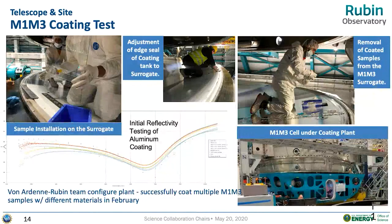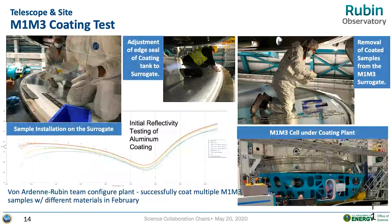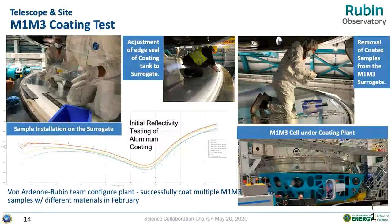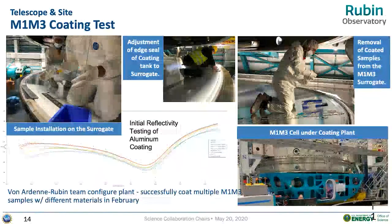Just before the COVID shutdown, the coating system contractor came back from Germany and worked with us to do a full-scale prototype run for the M1M3 aluminum coating. That was generally successful — functionally it went well. The performance of the coating is still being investigated; it met spec in some places and missed spec in others but not by much, and we'll work on that during the interim.